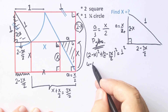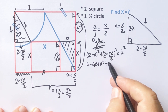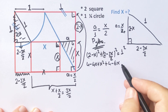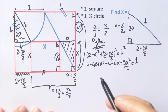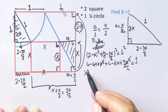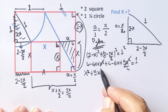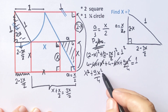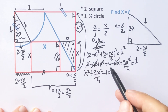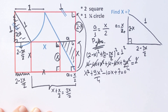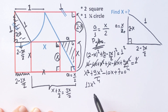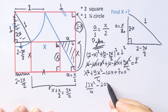Two minus x, whole squared, plus two minus three x over two, whole squared, equals one squared. Expanding: four minus four x plus x squared plus four minus six x plus nine x squared over four equals one. Equating the denominator and simplifying, minus ten x plus eight minus one equals seven equals zero, so minus ten x plus seven equals zero.